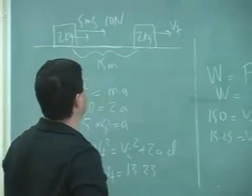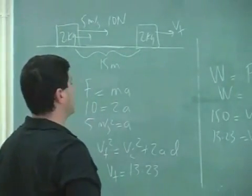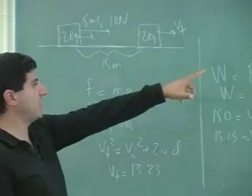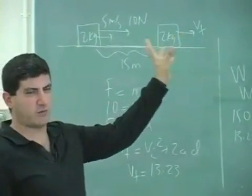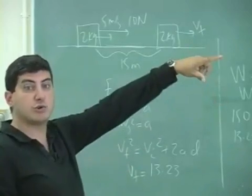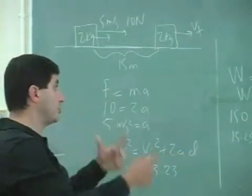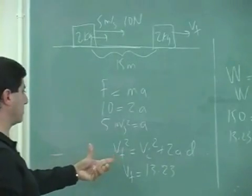But now, do we know the T? Actually, we don't know the T, right? So that method, the impulse method, would not be my favorite choice for this problem, because we don't know the T. We could solve for the T using kinematics here.